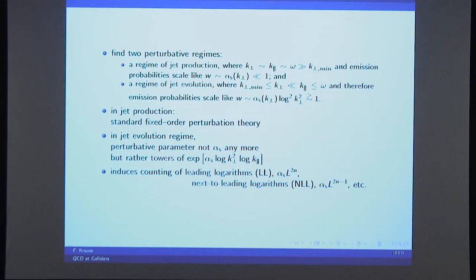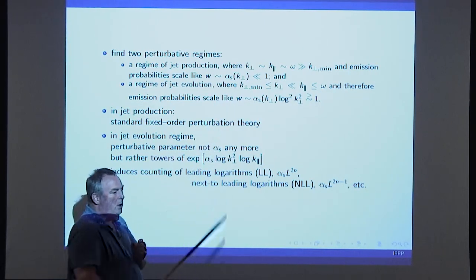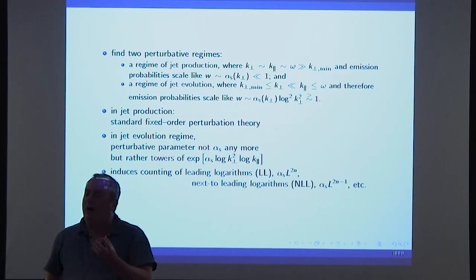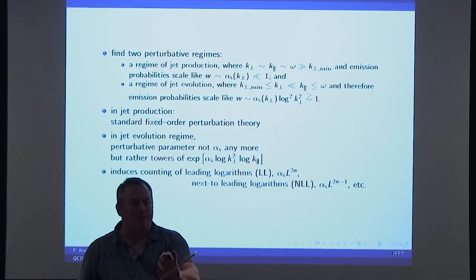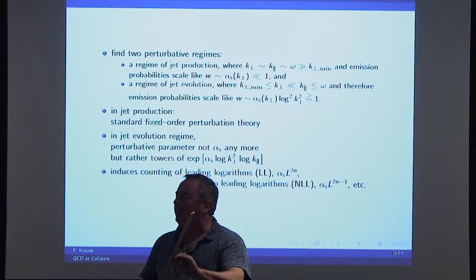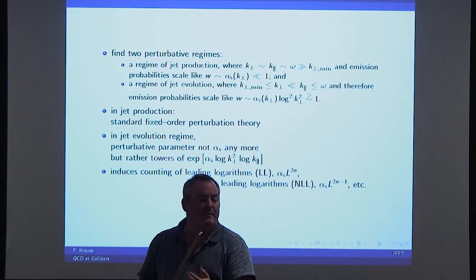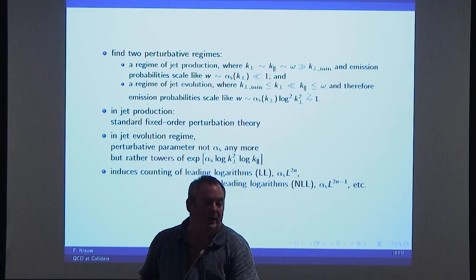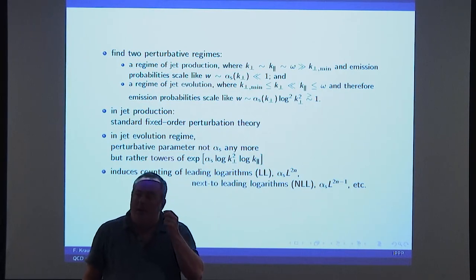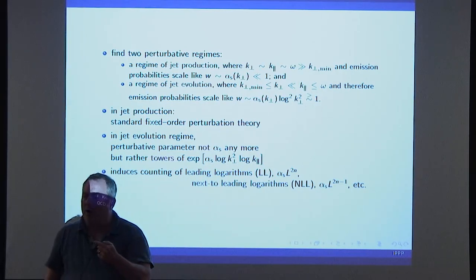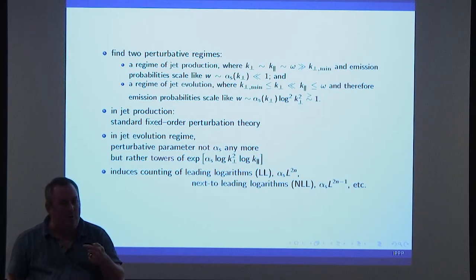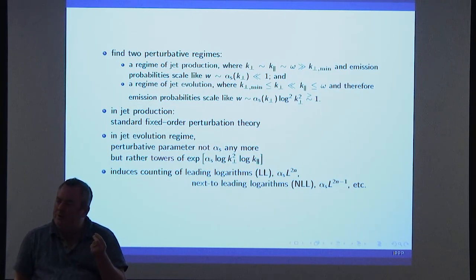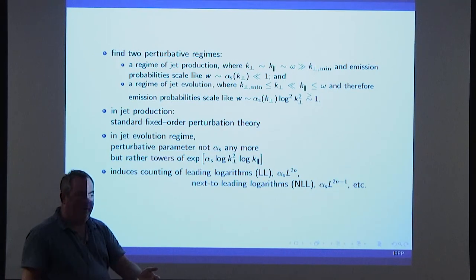It's important to realize this, because at some point what we're doing now is we're going to switch to a regime where these logarithms are sufficiently large such that you have multiple emissions along, say, a quark line. And these guys will form what we call jets. I tried to explain beforehand what you have to do to calculate these things in a meaningful way, to give you a feeling of where you sit in your theory.